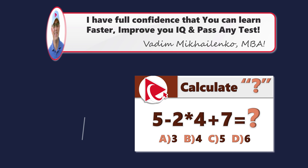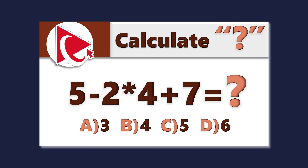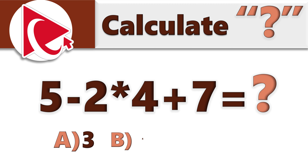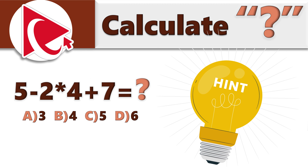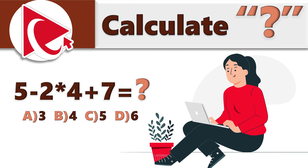Get ready for a mind-bending question — definitely a cognitive workout. You are presented with the expression: 5 − 2 × 4 + 7 = ? Calculate the value and select from: Choice A, 3; Choice B, 4; Choice C, 5; Choice D, 6. Hint: make sure to verify your answer before moving forward. If you find a better way to solve it, please share in comments.